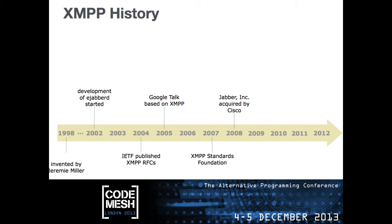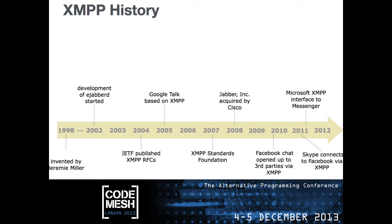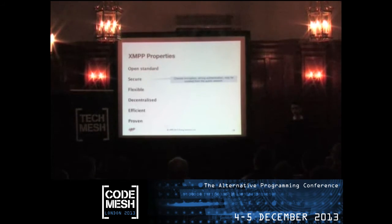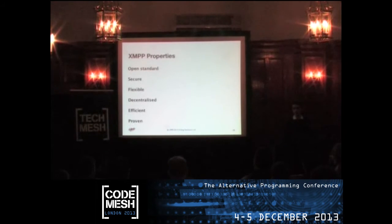Over the years, XMPP has de facto become a standard for messaging, as other big companies that offer messengers start to integrate with it. Facebook chat can be connected over XMPP; Microsoft also released an XMPP interface. The reason it is so widely adopted is because it's an open standard — that's probably one of the key features. It's also secure, with channel encryption and strong authentication algorithms. You can isolate your network from public if needed.